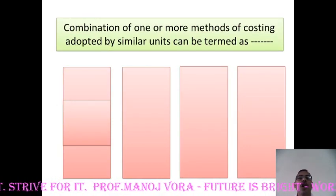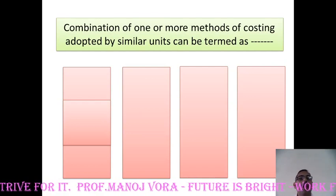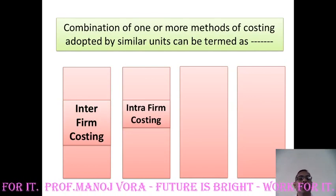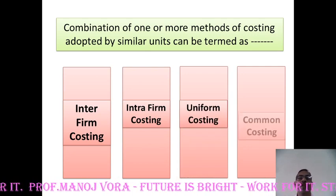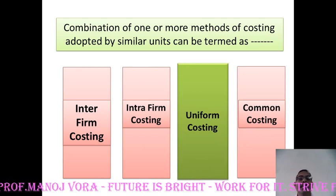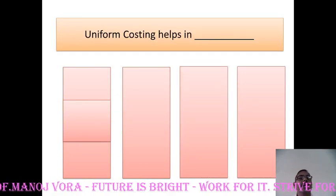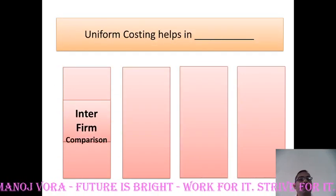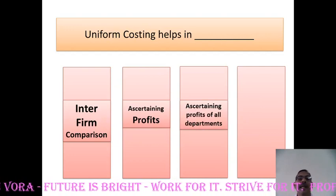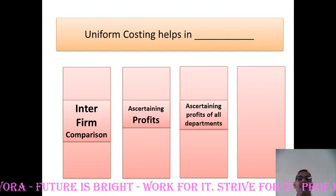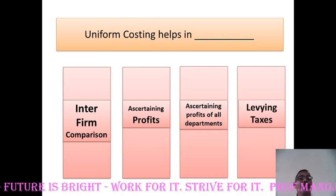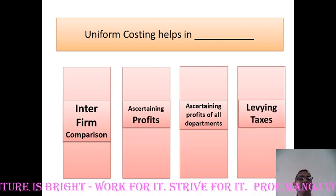Combination of one or more methods of costing adopted by similar units can be termed as inter-firm costing, intra-firm costing, uniform costing, or common costing. Your right answer has to be uniform costing. Uniform costing helps in inter-firm comparison, ascertaining profits, ascertaining profits of all departments, or levying taxes. The most suitable answer would be inter-firm comparison.